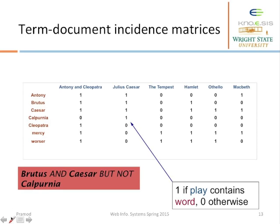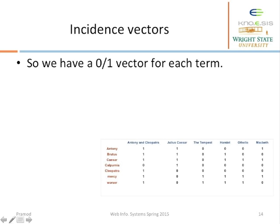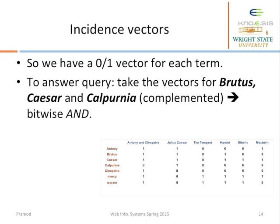Here is an example of a term-document incidence matrix. On the left hand side are the terms, and the text in blue refers to the names of Shakespeare's plays. The matrix is populated based on the presence or absence of each term. 1 refers to the presence of a particular term in a play and 0 refers to its absence. Let's consider the query: Brutus AND Caesar but NOT Calpurnia. We take the vectors for Brutus and Caesar and the complement of Calpurnia, and we do a bitwise AND.